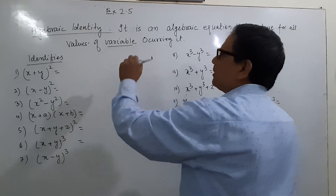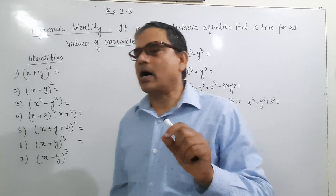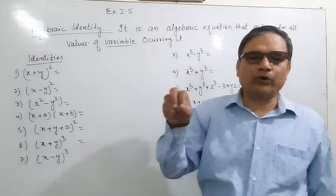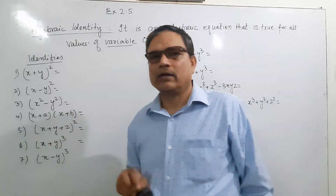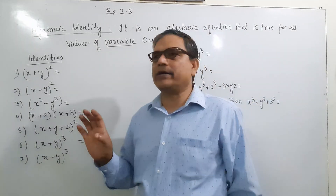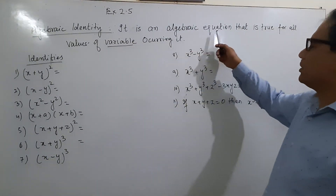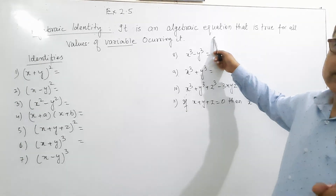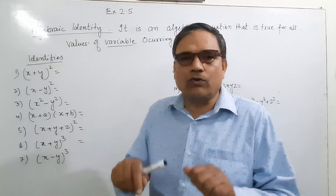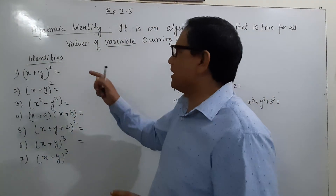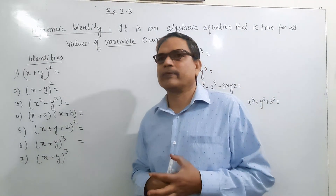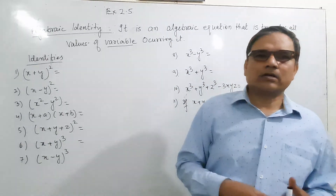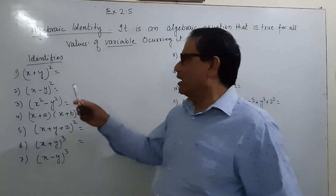If you put any values of a given variable, then LHS is always equal to RHS. That is what algebraic identities mean — the equation satisfies for all values of the variable. We have done these identities in a previous class; now we will repeat them, solve one example of each, and then solve some questions from the book.